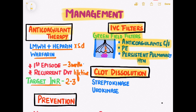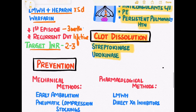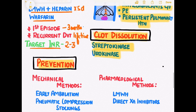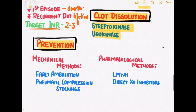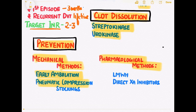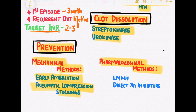We can dissolve the clot by using thrombolytics such as streptokinase and urokinase. We can prevent deep vein thrombosis in susceptible persons using either mechanical or pharmacological methods. In mechanical methods, we do early ambulation or make the patient wear pneumatic compression stockings. Drugs such as low molecular weight heparin and direct thrombin inhibitors such as rivaroxaban can also be employed in prevention of deep vein thrombosis. The pharmacological methods are considered more superior than the mechanical methods.